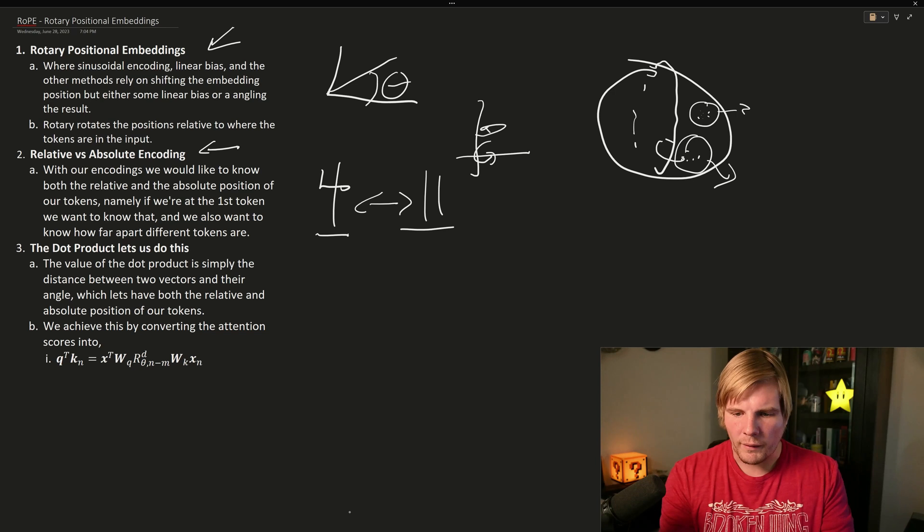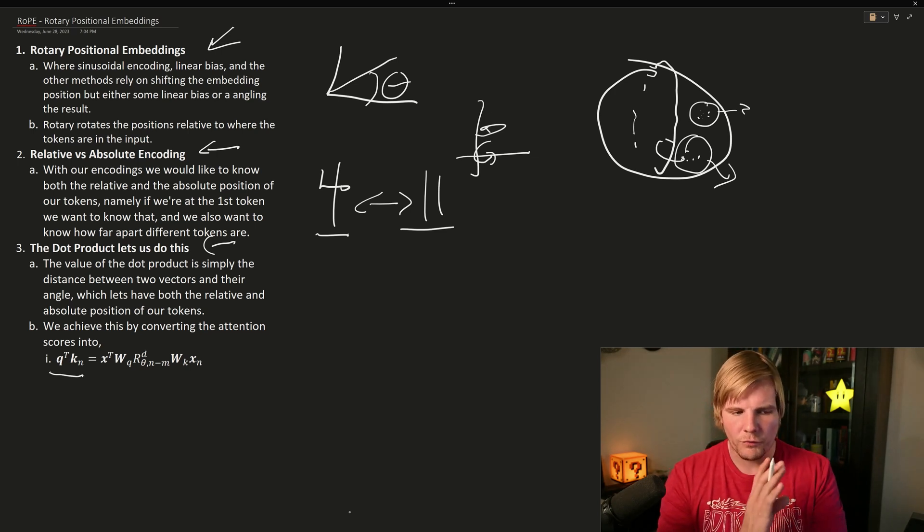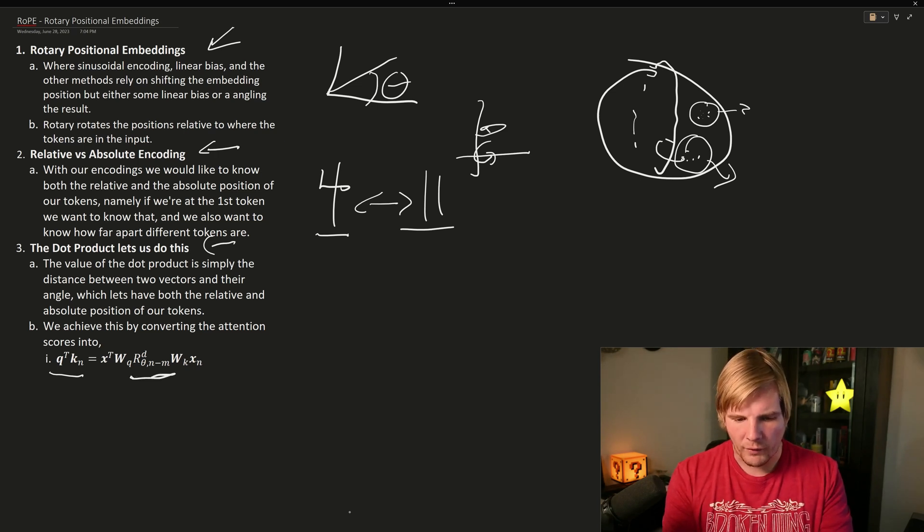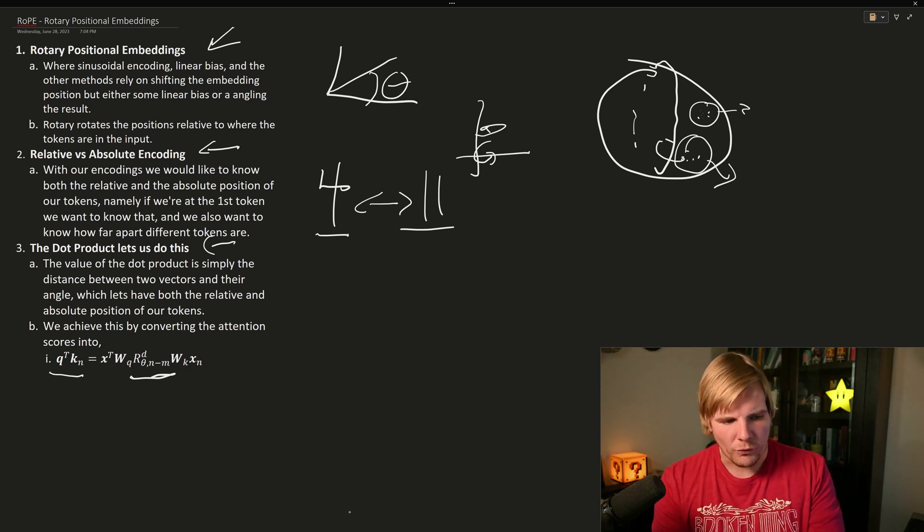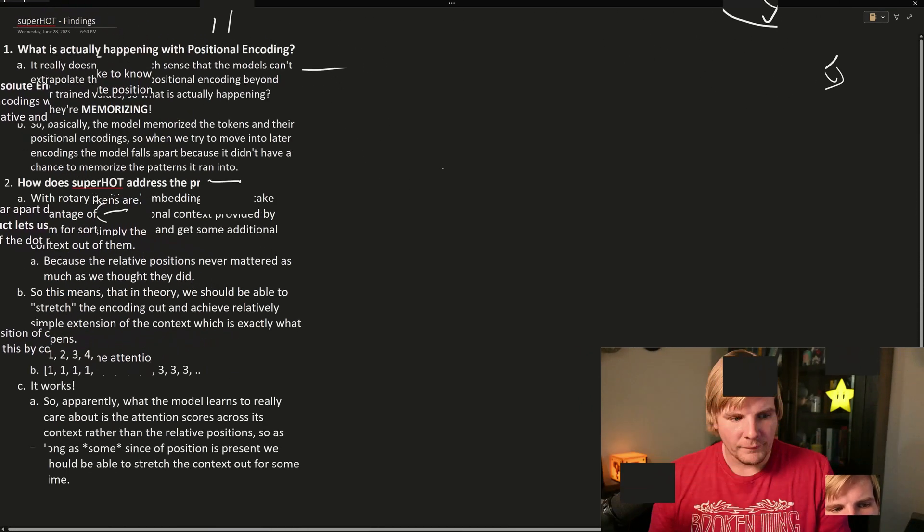But how rotary encoding does this is through the dot product, where when we compute our attention scores, the dot product falls out all of this rotation, and only tells us the distance between the tokens as a function of those degrees. So you get that same notion of relative and absolute position by the dot product. So now let's move on to Superhot and how it takes advantage of this to really increase the context length.